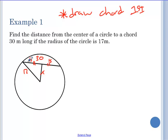The chord radius theorem says this gets split in half. So this is 15 over here. This is 15 over here. Now, what 15 and 17 make a right triangle? It's 8. That's one of your triples. So the distance from this chord to the center is 8.